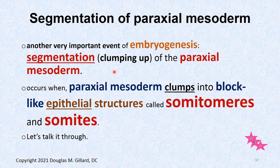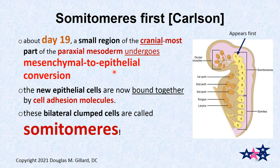Without segmentation there's no life — this segmentation of paraxial mesoderm must occur. It clumps into blocks of epithelial structures. The ones in the cranial region are called somitomeres, and the rest are called somites. The entire paraxial mesoderm runs all the way from the tail to the skull. It starts up cranially — the very first block clumps about day 19 into really visible structures, and the first pairs of somitomeres are born.